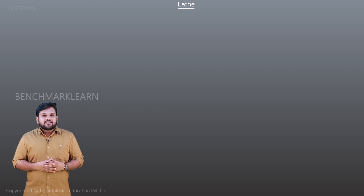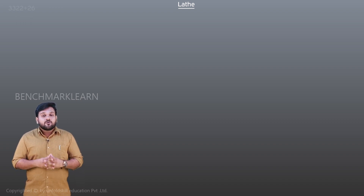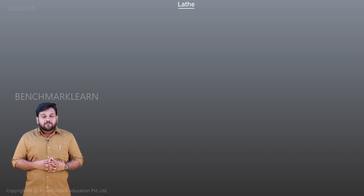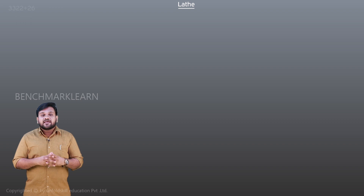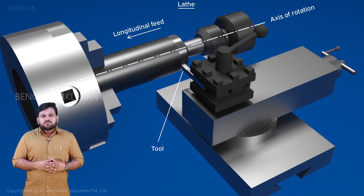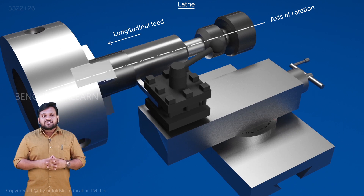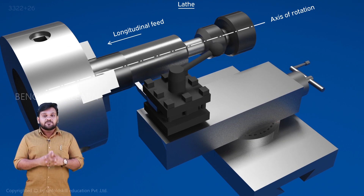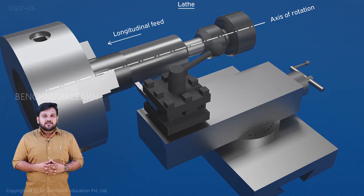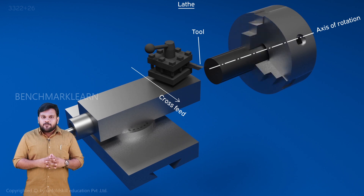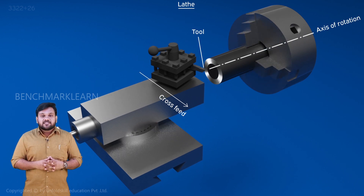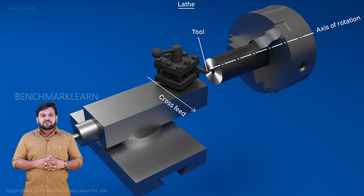The basic function of a lathe is to hold a workpiece and rotate it about an axis. A cutting tool is fed — that is, moved — in a direction parallel or perpendicular to the axis of rotation. If the tool is moved parallel to the axis of rotation, then a cylindrical surface is produced. If the tool is moved perpendicular to the axis of rotation, then a flat surface is produced.